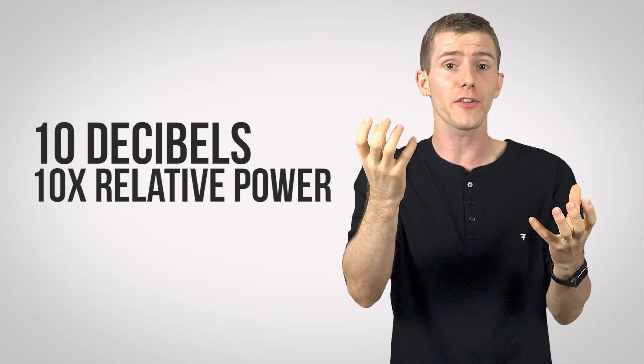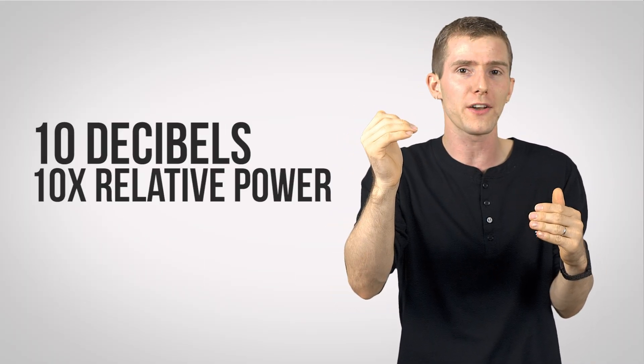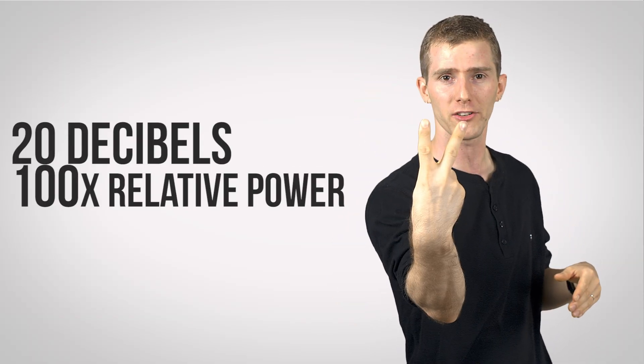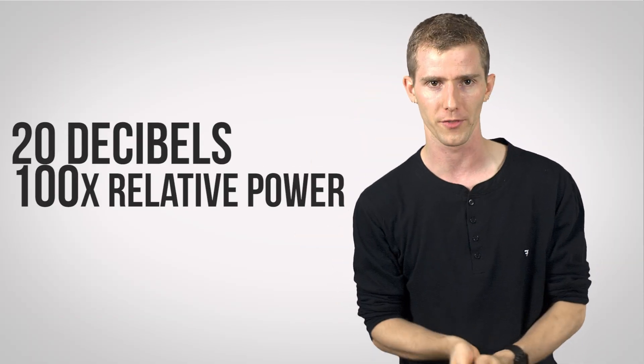So if one value is 10 decibels higher than another, it is an order of magnitude greater, whereas a 20 decibel difference would be two orders of magnitude greater, and so on and so forth.